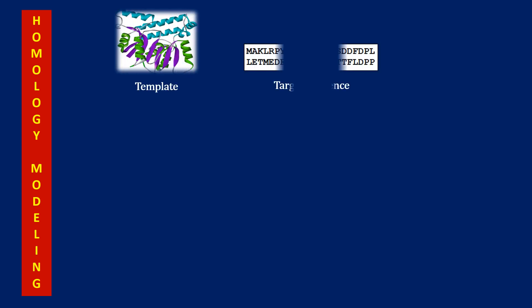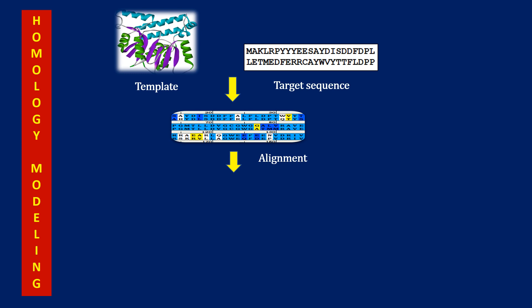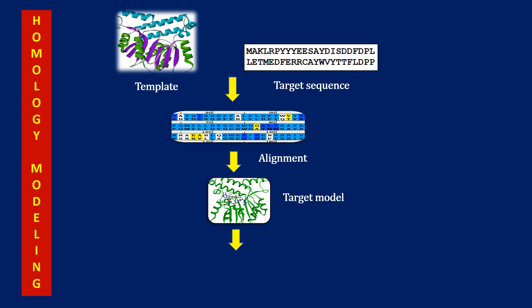I hope you know what homology modeling is, since you are viewing this video on how to validate a model. But let's briefly revise: in homology modeling we take a target and a template sequence, align both sequences, and submit this alignment to a program like MODELLER or Swiss-Model. A 3D model is generated, and after obtaining the target model, we need to validate it because it is a theoretical model — we need to check whether it is correct in terms of stereochemical quality or energy.